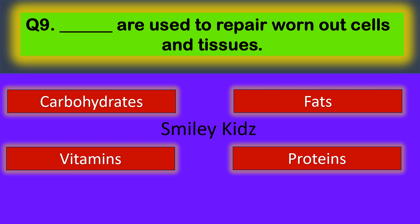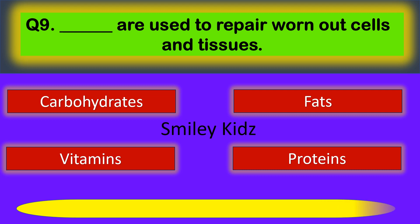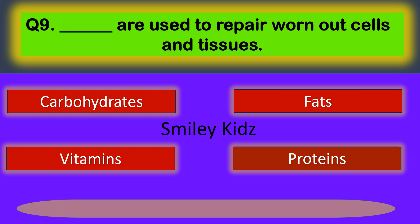Question number nine: dash are used to repair worn out cells and tissues. Your options are: carbohydrates, fats, vitamins, and proteins. The correct answer is proteins. Proteins are used to repair worn out cells and tissues.